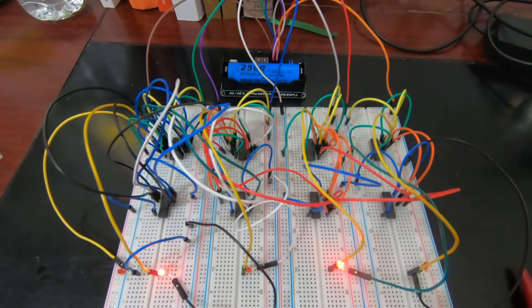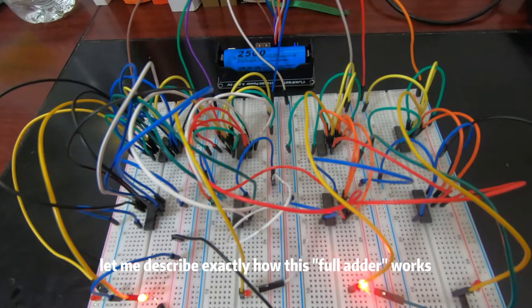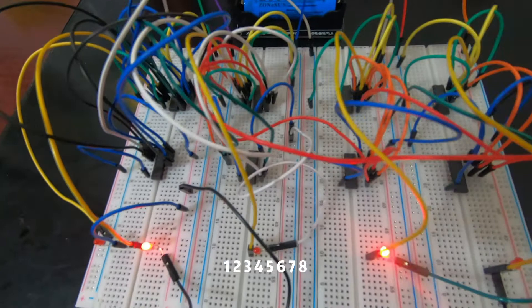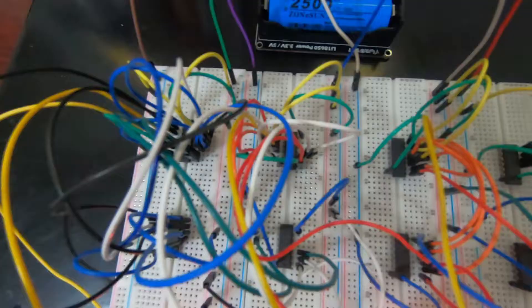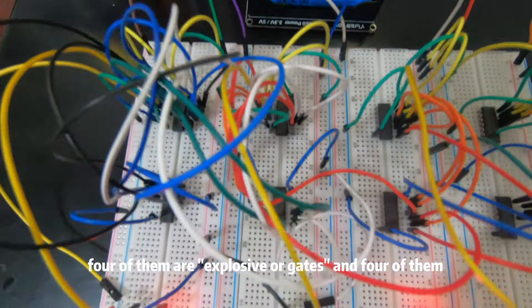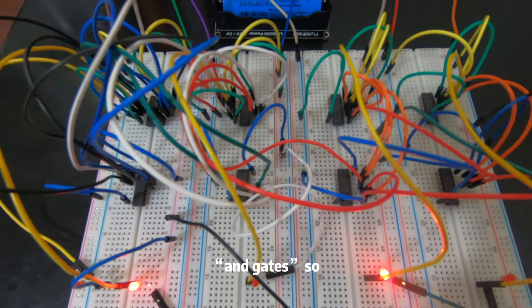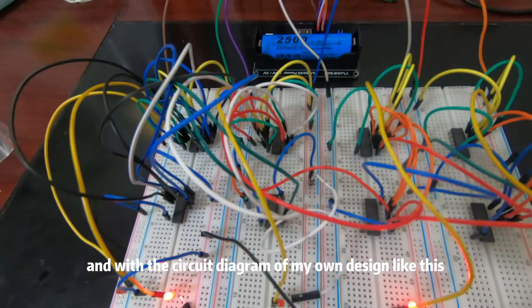Now let me describe exactly how this calculator works. First, I use eight logic gate ICs numbered one through eight, and they are from Texas Instruments. Four of them are exclusive OR gates and four of them are AND gates, with a circuit diagram of my own design.